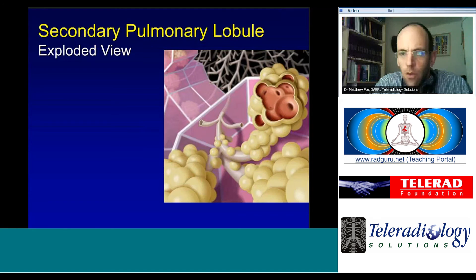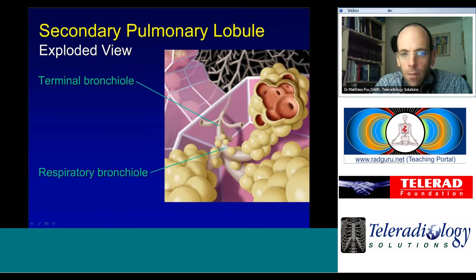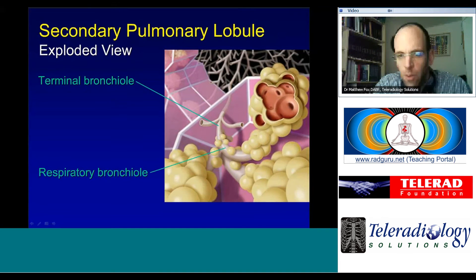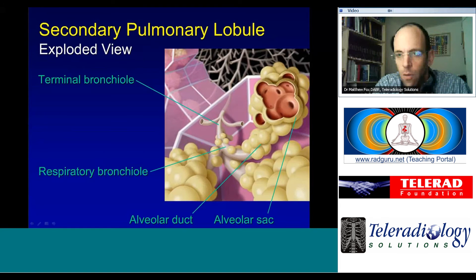Looking closer inside the lobule: there is just one terminal bronchiole per secondary pulmonary lobule. Branching off that are several respiratory bronchioles — you can see alveolar cells on them here. Each respiratory bronchiole leads to an alveolar duct, which is completely surrounded by alveoli, and then into the alveolar sac, where there is no longer a bronchiole or airway, but rather a conglomerate of alveoli.